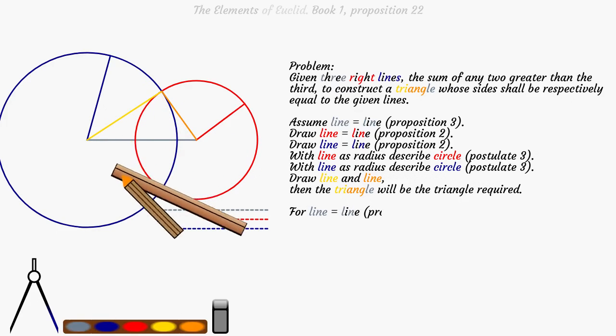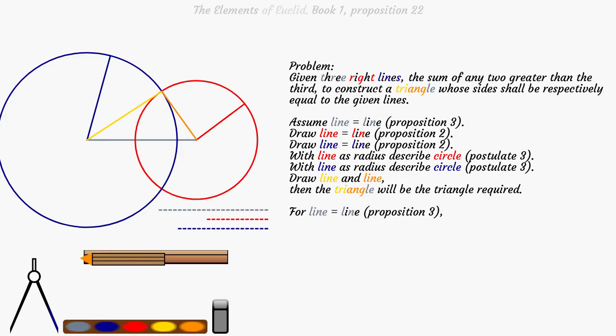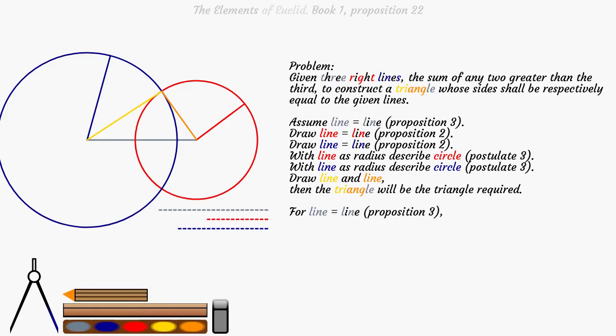For the grey line is equal to the dashed grey line, Proposition 3. And the orange line is equal to the red line, is equal to the dashed red line, Postulate 3 and Proposition 2.